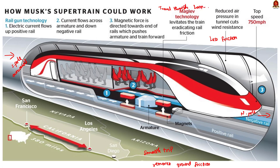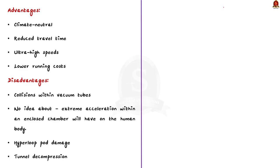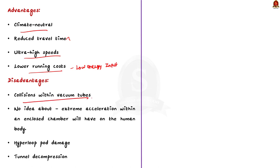Some advantages of Hyperloop include: being fully electric and aiming for climate neutrality over its life cycle; considerably reducing door-to-door travel time by connecting mobility hubs in large metropolitan areas; contactless levitation and propulsion in a low-pressure environment allowing ultra-high speeds; and lower running costs than high-speed trains due to lower energy input, though maintenance issues have not been fully assessed. Disadvantages include collisions within vacuum tubes, uncertainty about the effect of extreme acceleration on the human body, hyperloop pod damage, and tunnel decompression concerns.